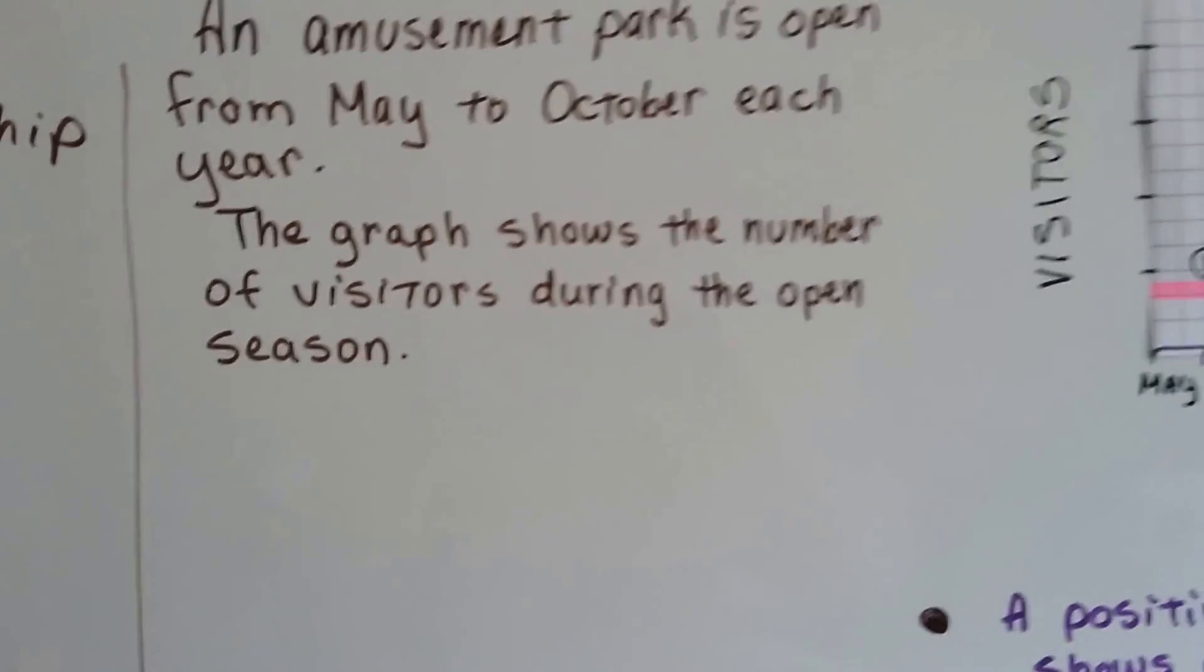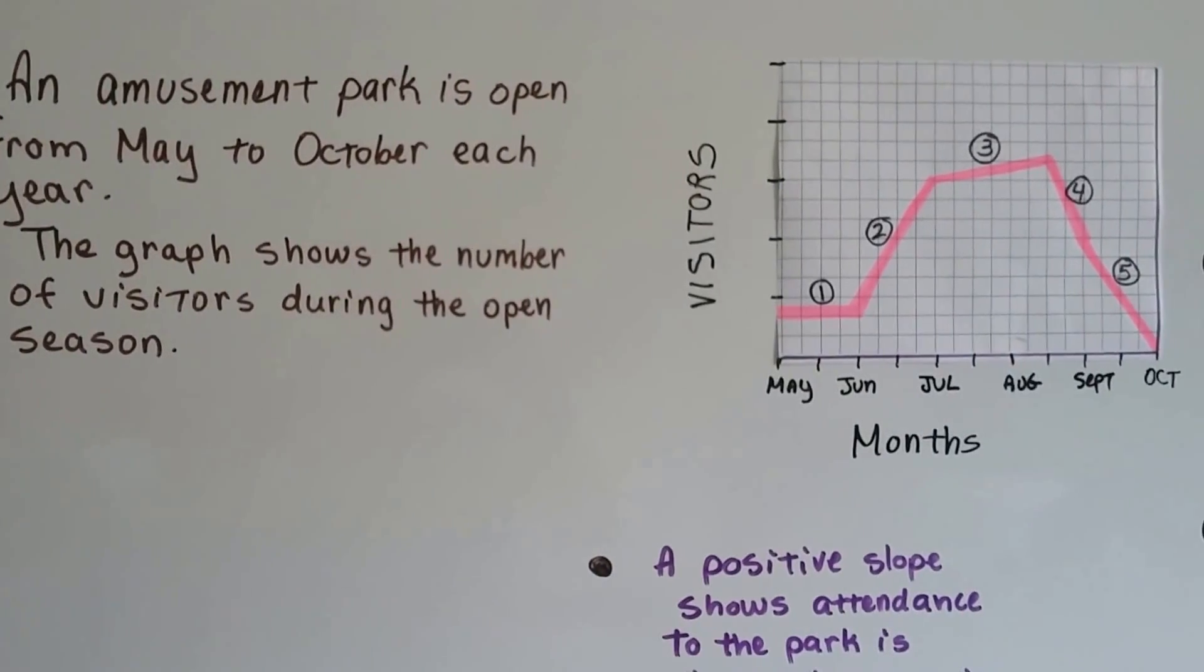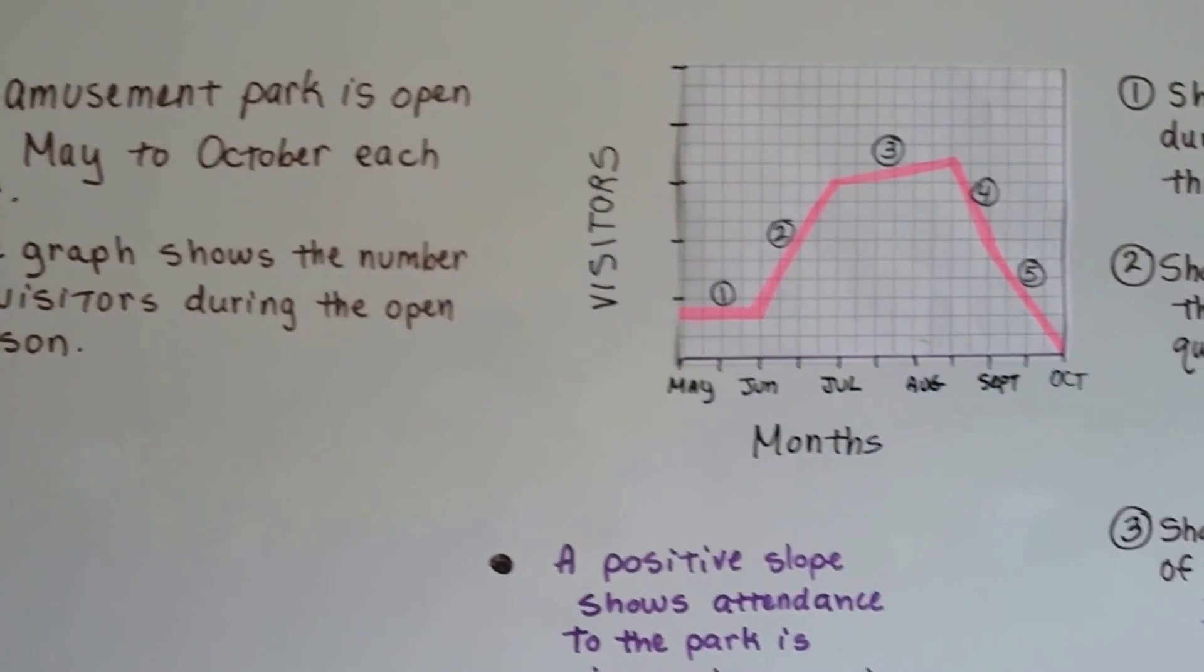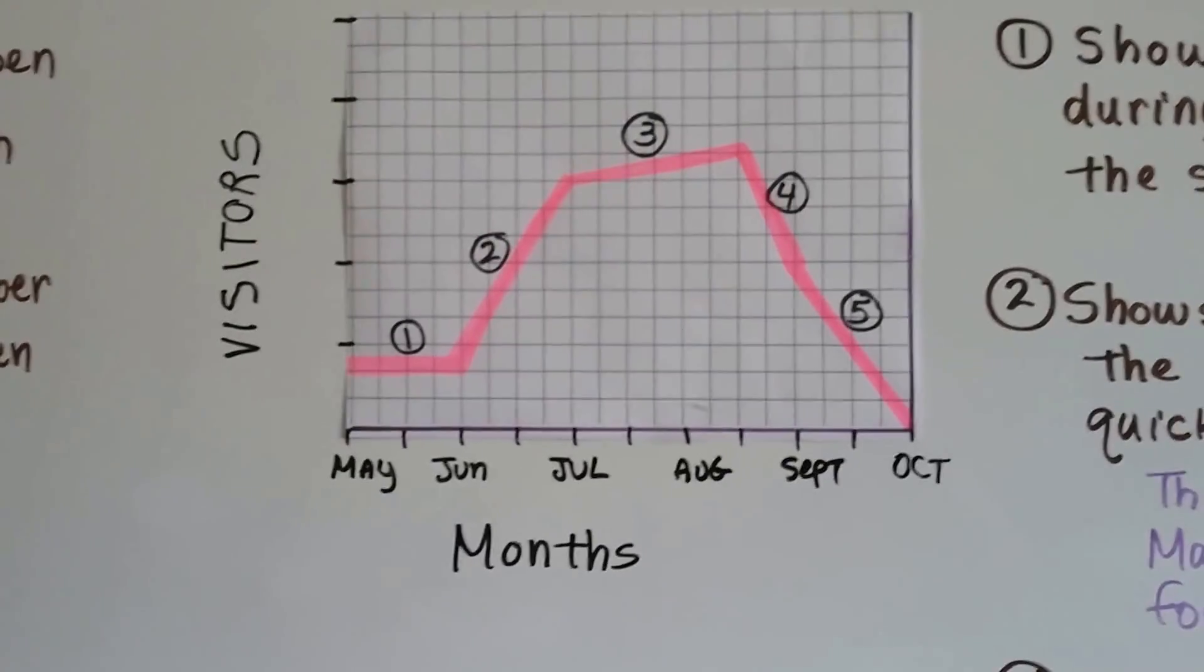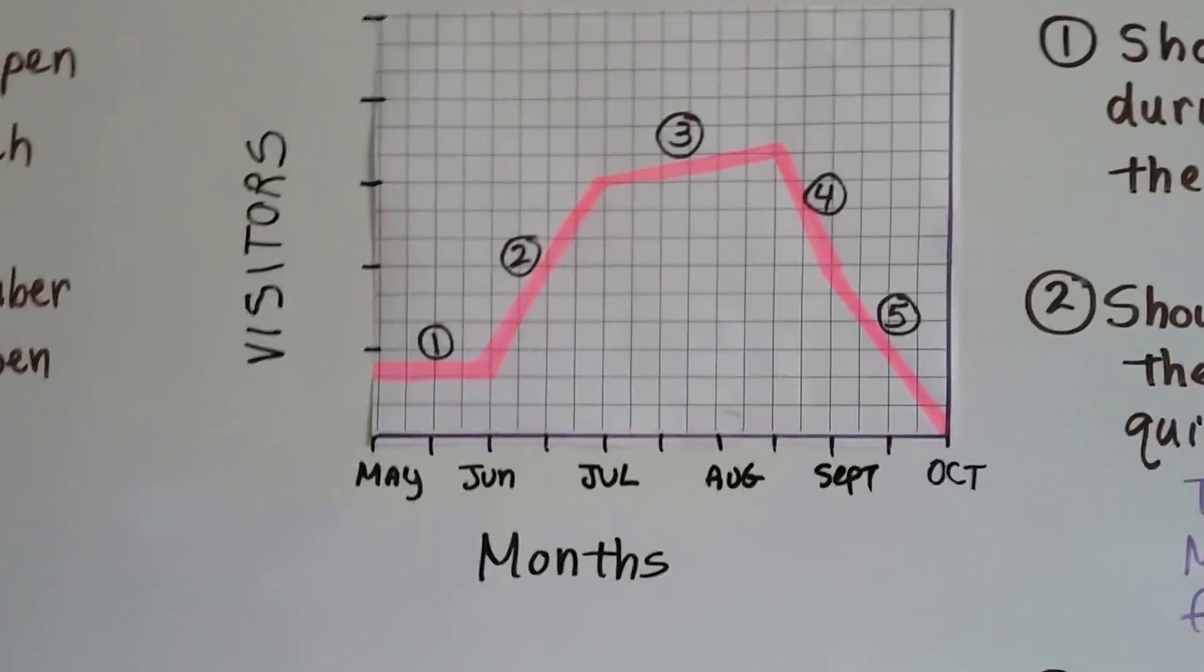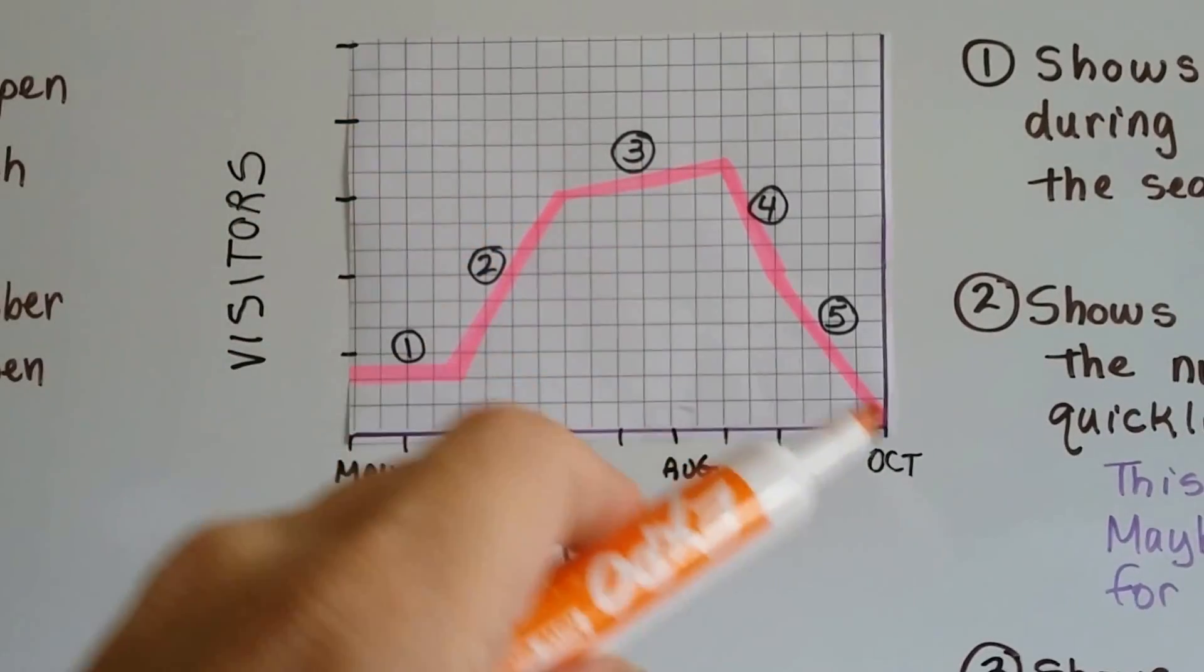We have an amusement park. It's open from May to October each year. And this graph shows the number of visitors during the open season. I can see that it opens in May and it closes in October. Can you see what the graph is doing right here and then suddenly right here?